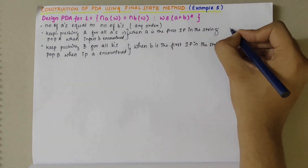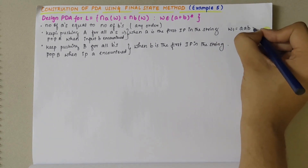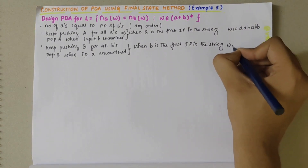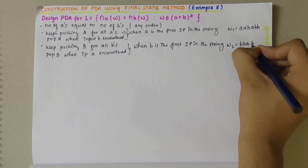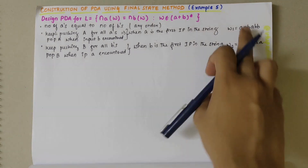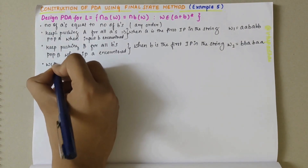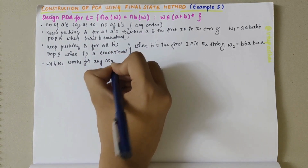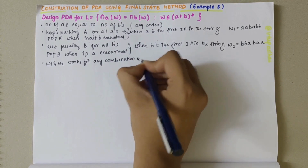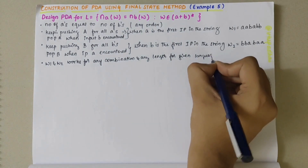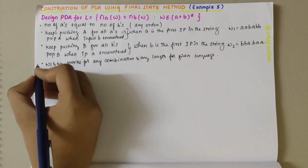Let me consider two cases. I'll take w1 as A A B and A B B — the string can be of any order. Next I'll take w2 as B B A and B A A. So I've taken two strings, w1 and w2, which work for any combination and any length for the given language.